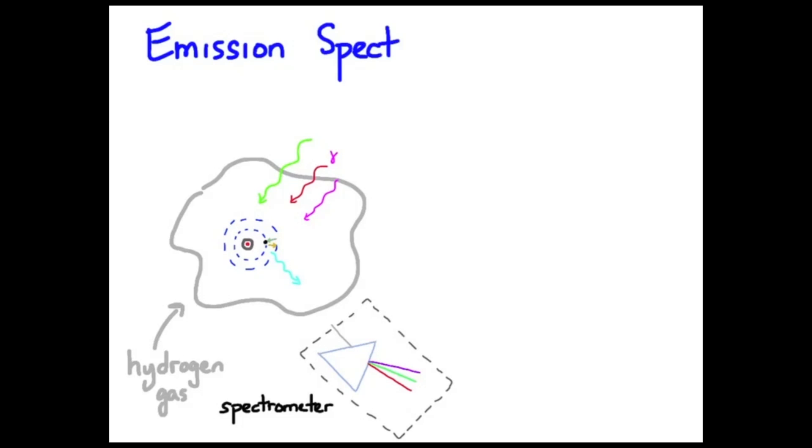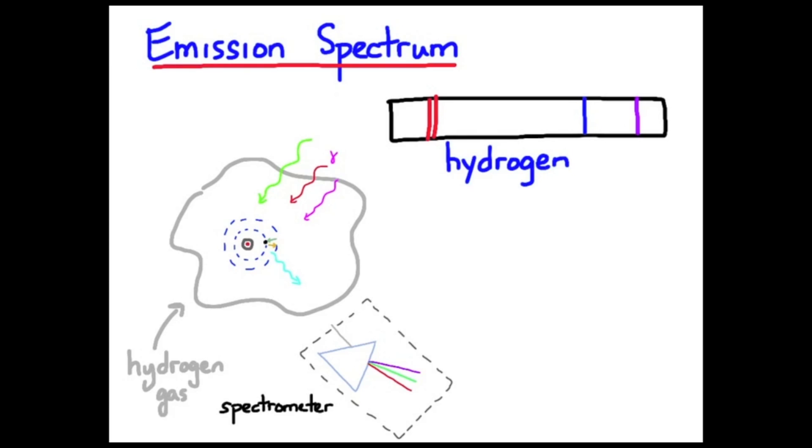The spectrometer will give us what we call an emission spectrum for hydrogen. In this case, because of the discrete number of energy levels available in the hydrogen atom, there are four emission lines for hydrogen that occur in the visible part of the electromagnetic spectrum.